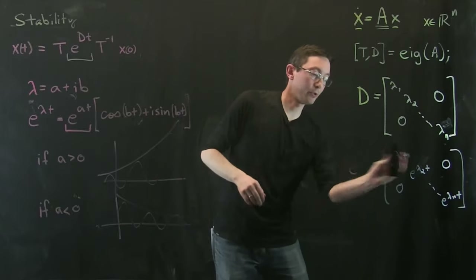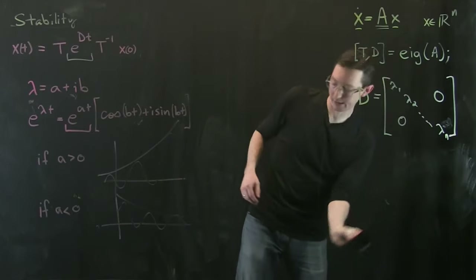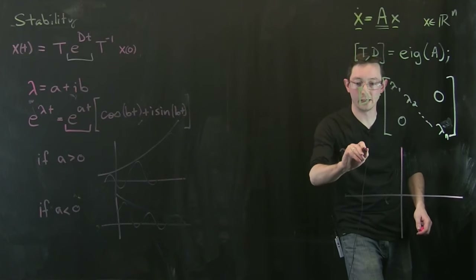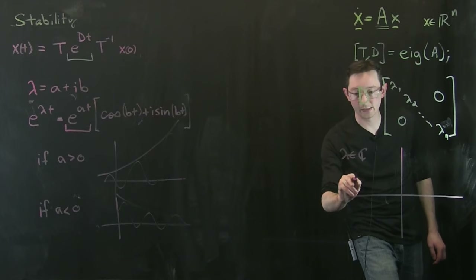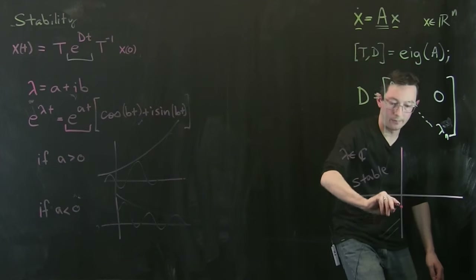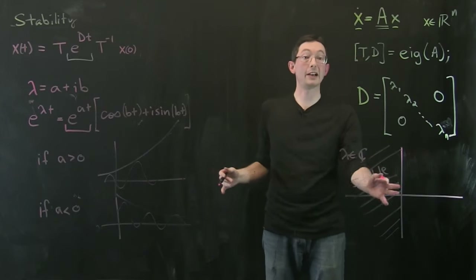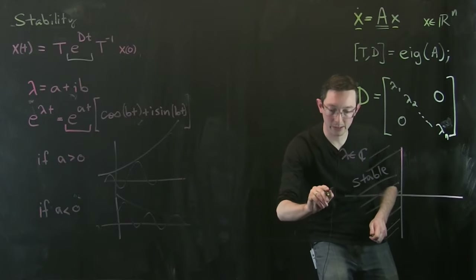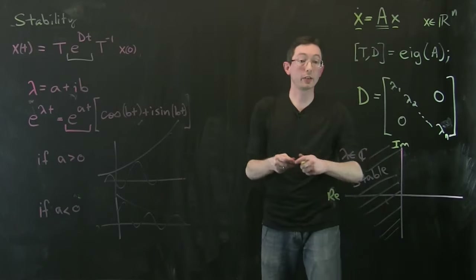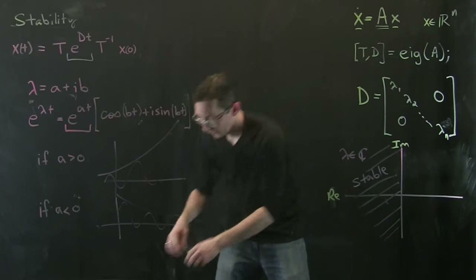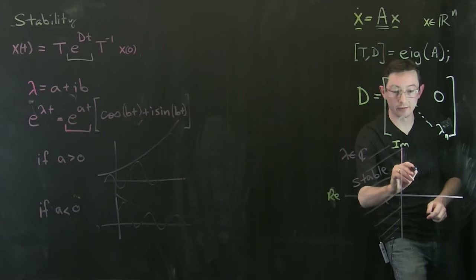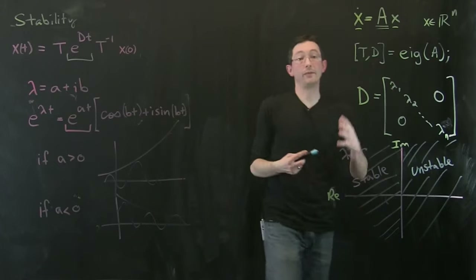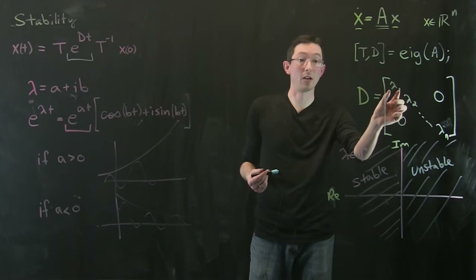It's simple to state and write down. I think of eigenvalues as living in the complex plane, with the real axis horizontal and imaginary axis vertical. The system is stable everywhere in the left half plane where the real part is negative. Anywhere the real part is positive, it's unstable. If any of your eigenvalues have a positive real part it's unstable; if they all have negative real part, it's stable.